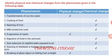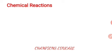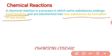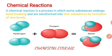Now that we understand physical and chemical change, let us understand what chemical reactions actually are. A chemical reaction is a process in which some substances undergo bond breaking and are transformed into new substances by the formation of new bonds. In a chemical reaction, the original bonds of the original substance break, and after breaking, new bonds are formed with new substances. Due to this new bonding, a new substance is formed. This entire process is called a chemical reaction.